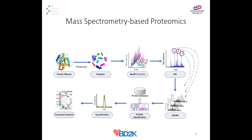Mass spec-based proteomics — this is pretty typical workflow. We have a protein digest, and then we run either single-phase or multi-dimensional separation, which generates MS1 scans and then tandem scans. With tandem scans, we search against liquid databases for protein identification. Next, we measure the abundance of peptides or proteins, and finally we do functional analysis, which can be pathway analysis, gene ontology, protein interaction, or network analysis.